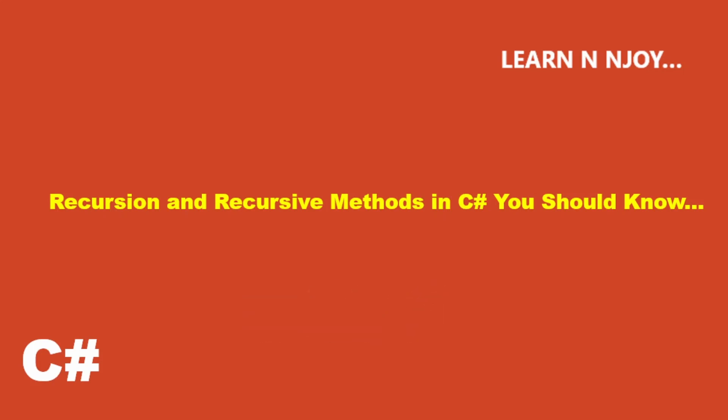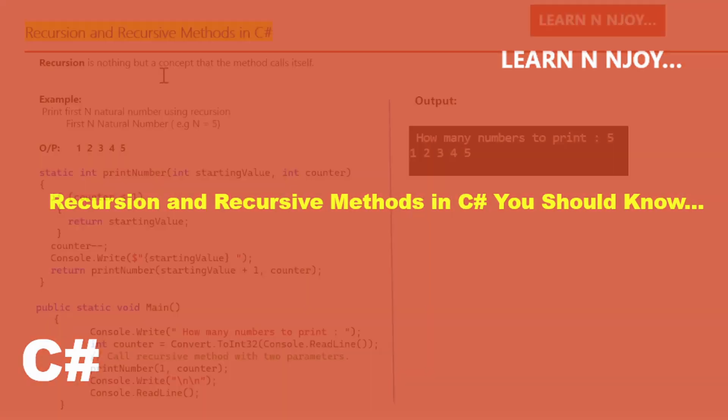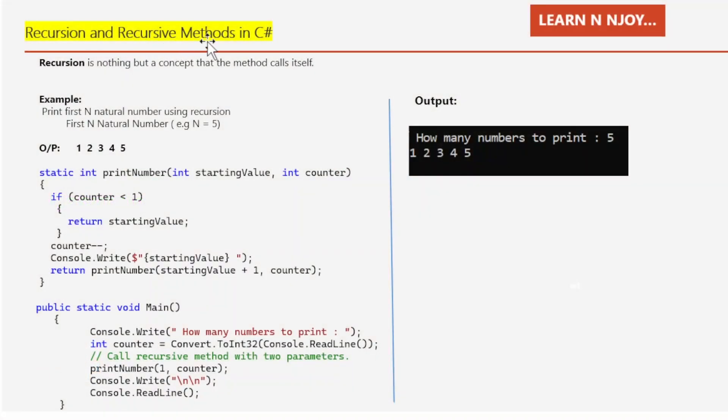Okay, without any further delay let's get started. Recursion and recursive methods in C# — what is recursion? Recursion is nothing but a concept where the method calls itself. Inside a method, we call the same method again. When a method calls itself, there must be some point where this calling gets stopped, otherwise it will run endlessly. So we will have to provide some condition, and when it gets satisfied the recursive method would get terminated.